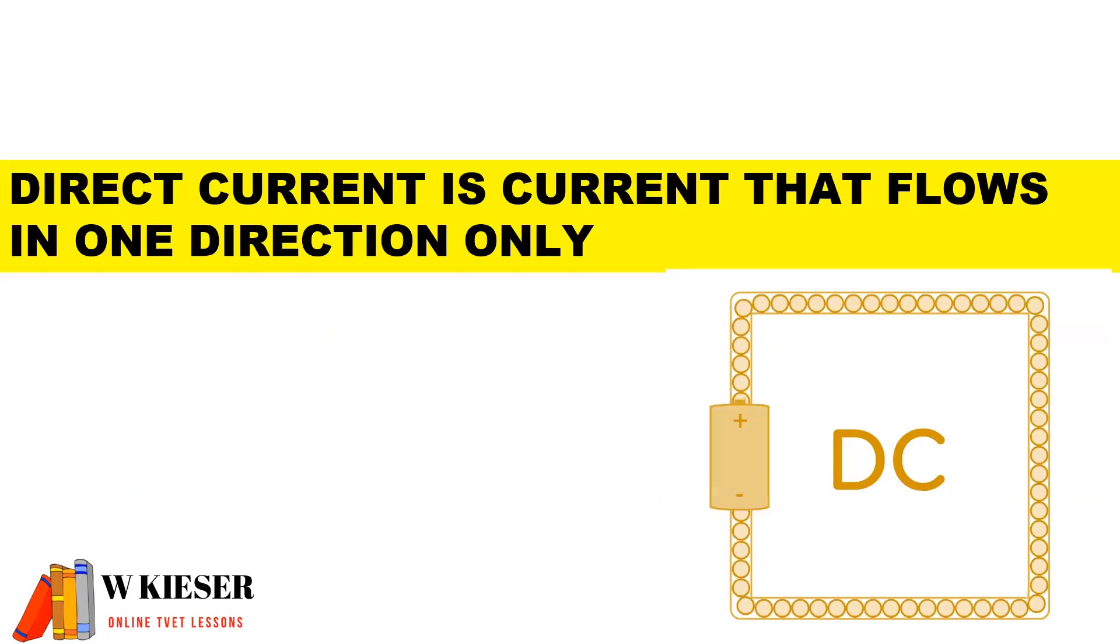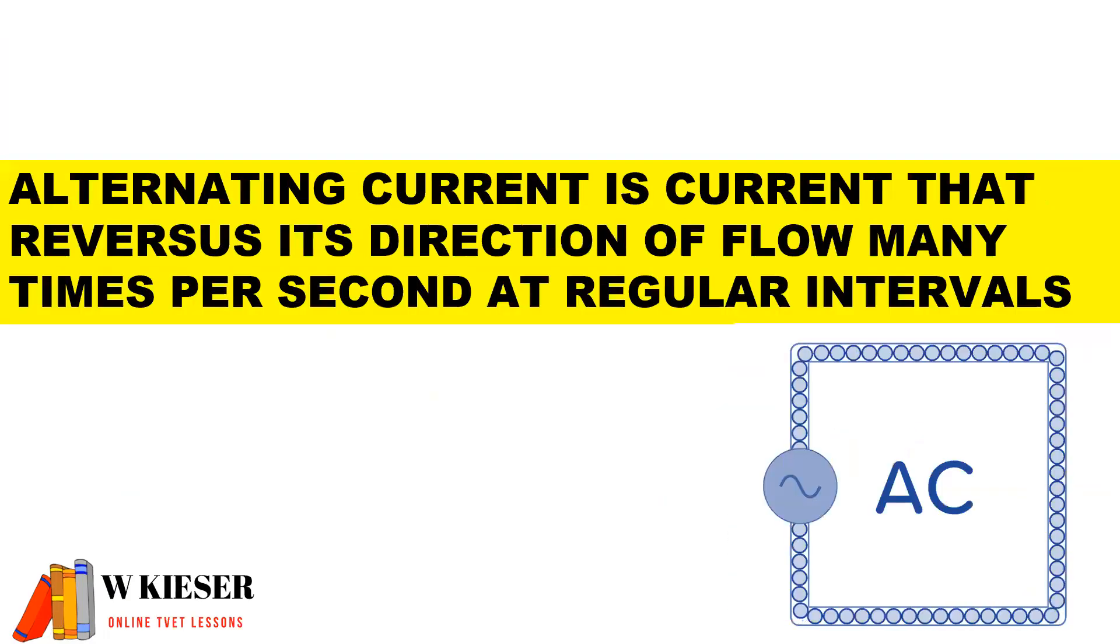Direct current is current that flows in one direction only. Alternating current is current that reverses its direction of flow many times per second at regular intervals.